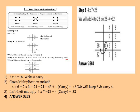In the third step, we take 4 into 7, which gives us 28, and we add the carry of 4, so we get 32. So the final answer is 3268.